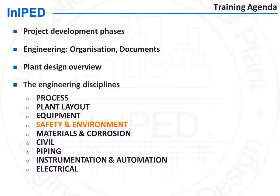In this section, we will review the work and the deliverables of the safety and environment discipline. The prime role of the safety discipline is to ensure plant safety. The main hazard in an oil and gas facility is loss of containment of flammable products leading to fire or explosion. To reduce this risk, one can reduce the likelihood of loss of containment, i.e. of leaks, and reduce their consequences. Safety discipline will work in these two areas.